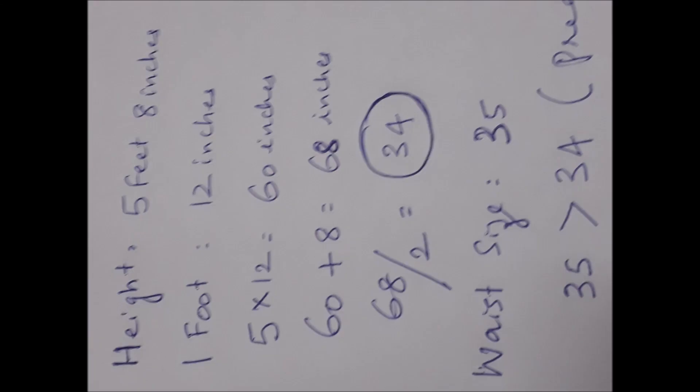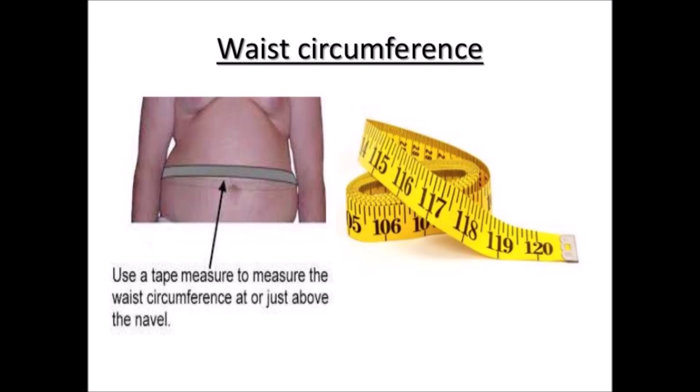To identify this, we first need to check our waist size. But before that, we need to know our height. For example, if someone is 5 feet 8 inches tall, we need to convert that to inches. Since 1 foot equals 12 inches, multiply 5 by 12 to get 60 inches, then add 8 — giving you 68 inches total. Divide 68 by 2, which gives 34 inches. That is the reference number for your waist size. Now you need to measure your actual waist size.